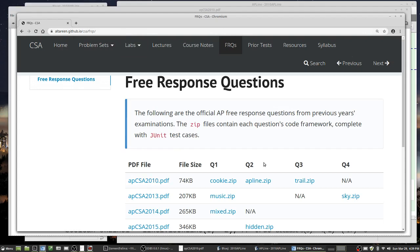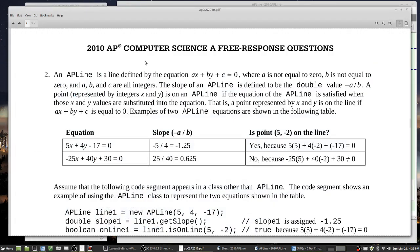You're going to need the CSA 2010 PDF and the APLine zip which is question 2. Here's the PDF, and we're going to take a look at question 2. This is pretty straightforward - you just have to write an APLine class. Read through this question and make sure that you understand it.